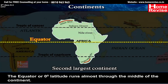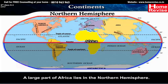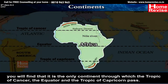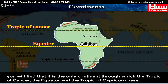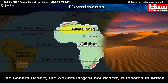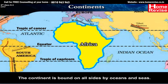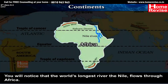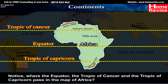Africa is the second largest continent after Asia. The equator or zero degree latitude runs almost through the middle of the continent. A large part of Africa lies in the northern hemisphere. It is the only continent through which the Tropic of Cancer, the equator and the Tropic of Capricorn pass. The Sahara Desert, the world's largest hot desert, is located in Africa. The continent is bound on all sides by oceans and seas. The world's longest river, the Nile, flows through Africa.